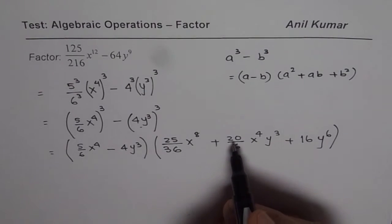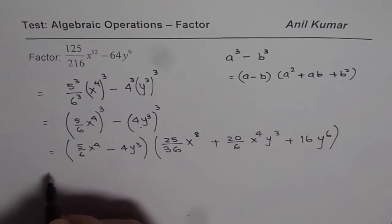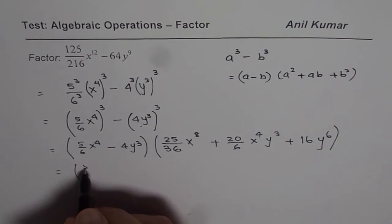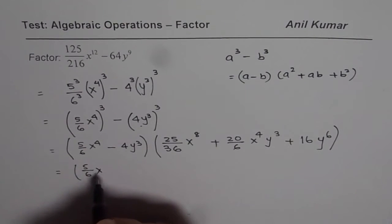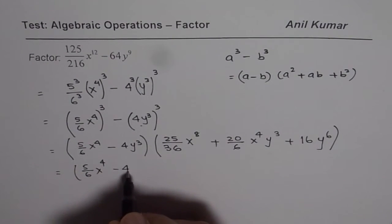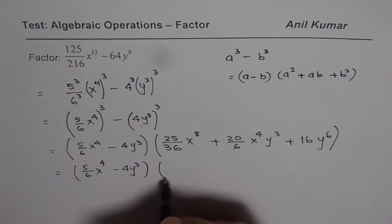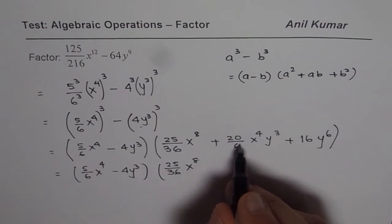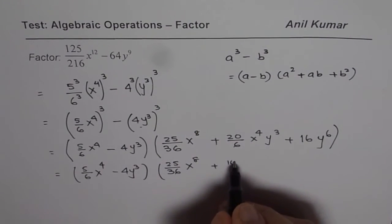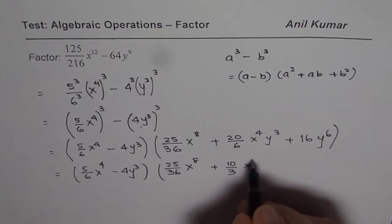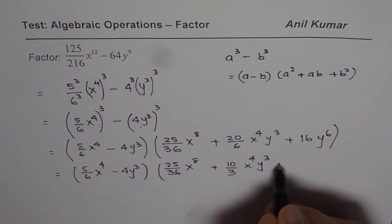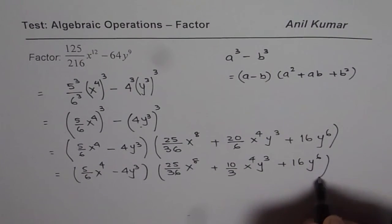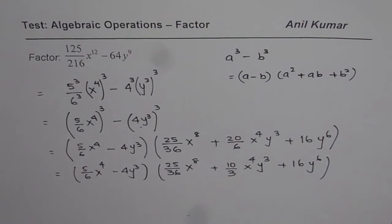Now as I was saying, we could simplify this a bit. Let us do that and write down our solution. So we get 5 over 6 x to the power of 4 minus 4y cube, 25 over 36 x to the power of 8. We can divide both by 2, 10 over 3 x to the power of 4 y cube, plus 16 y to the power of 6. So that becomes the factored form for the given expression.